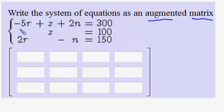So for example, the coefficients negative 5, 1, and 2 would go into the first three entries of our augmented matrix. You simply copy them. Then the constant 300 will go into the last answer box of the first row.